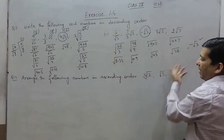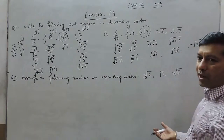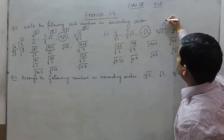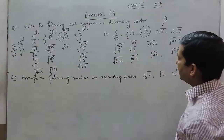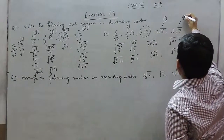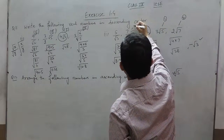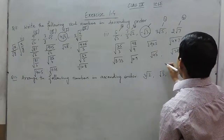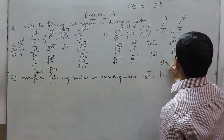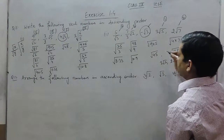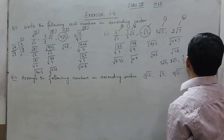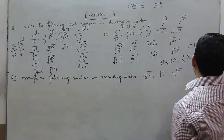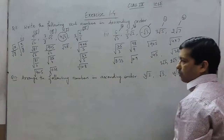A larger number will have a larger under-root value and a smaller number will have a smaller under-root value. So √45 is the largest, then √28, then √(98/9) ≈ √10.9, then √(25/3) ≈ √8.33, and −√3 is the smallest. Writing in descending order: 3√5, then 2√7, then 7/(3√2), then 5/√3, and the smallest is −√3.